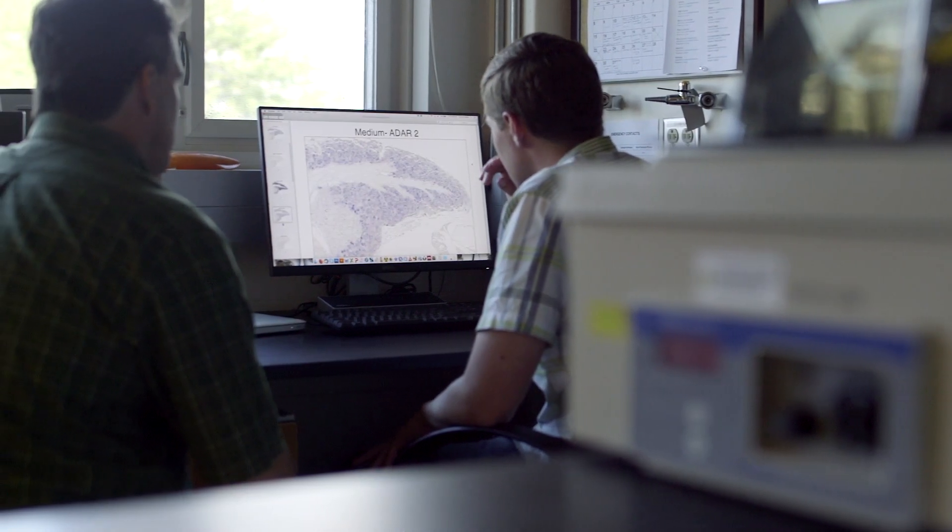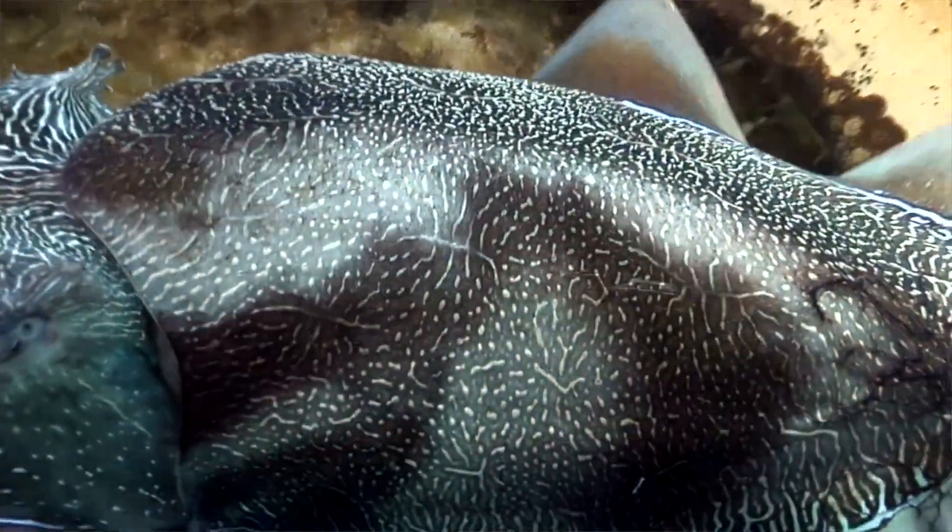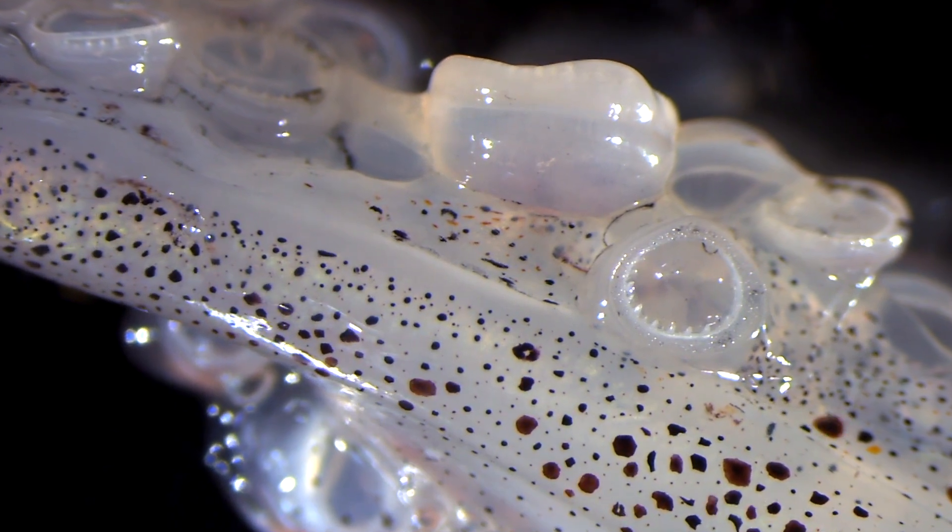In our brains, there are about a little over a hundred known places where we make changes in our RNA. Cephalopods, on average, they're doing it about 60,000 times. As conditions change or as you want to change your information in different ways, you can do that.